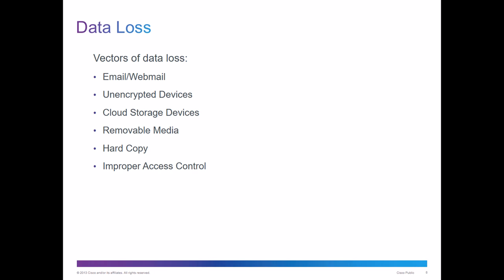Data loss vectors — the ways you can lose data. Somebody can attack your emails or web mail, attack encrypted devices, cloud storage devices, removable media like USB drives, and hard copies. That's why you have to shred your papers — hard copies can contain information that can be used to access the network. Improper access control — not controlling who can access your computers or caring about password strength — can also lead to data loss. So here's the first thing I want you to submit: the different types of data loss vectors. I want you to write those six points down.